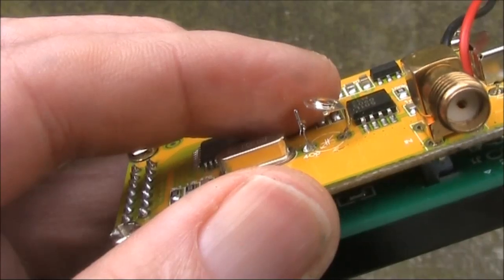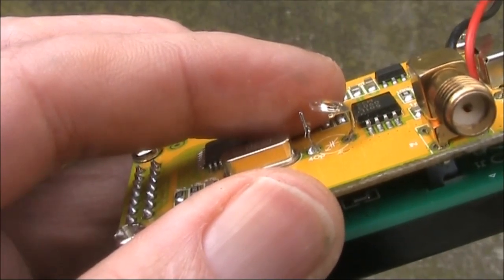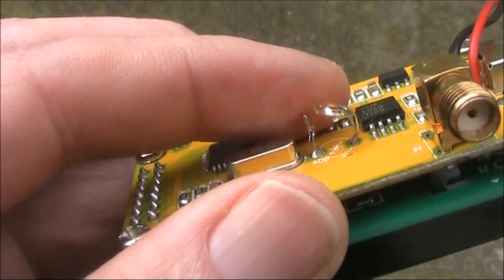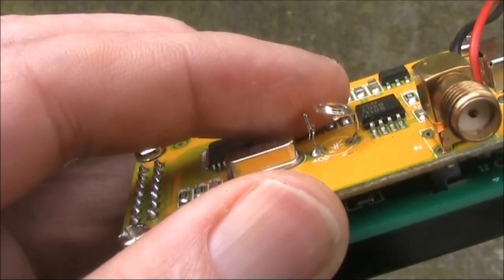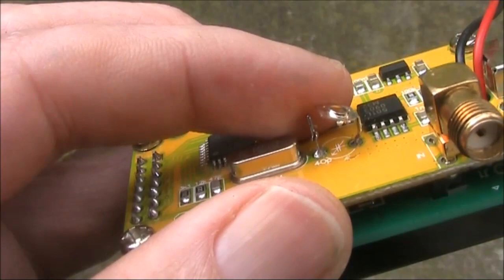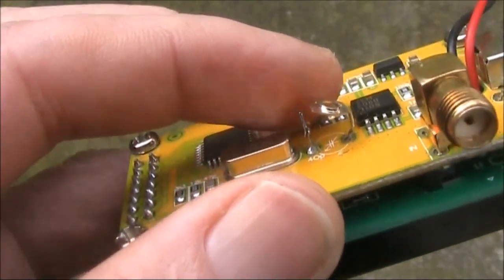What I did instead was leave the trimmer in place and with some pliers carefully crush its plastic, leaving just the trimmer's two connections. That would mean there'd be no interference to the circuit board.